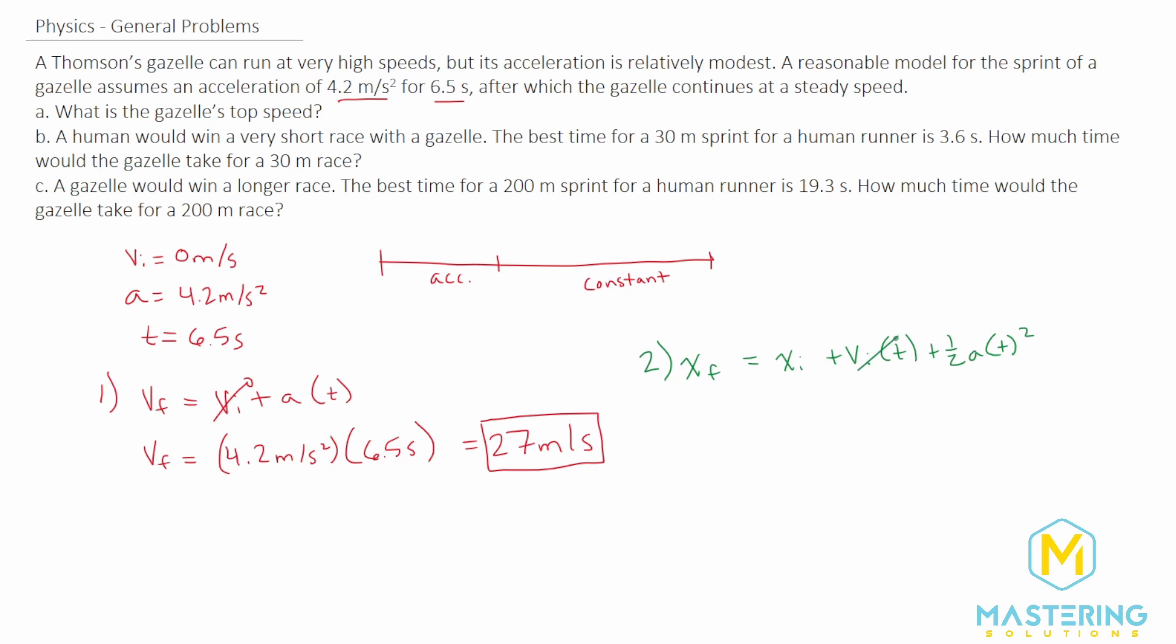The initial velocity again is 0 for the gazelle and the x initial is also going to be 0. So we have x final equals one half the acceleration times the time squared. We're trying to solve for the time so first let's multiply both sides of the equation by two which is the same as two over one so multiplying by the reciprocal we'll cancel that out. So we have two times the x final and then we'll divide both sides by a equals t squared. We take the square root so t equals the square root of two times the final distance divided by the acceleration.